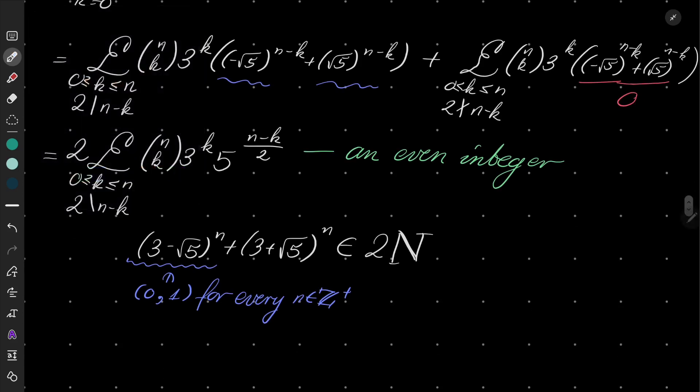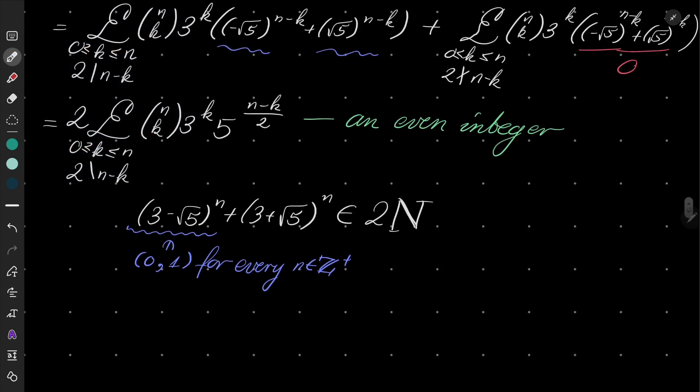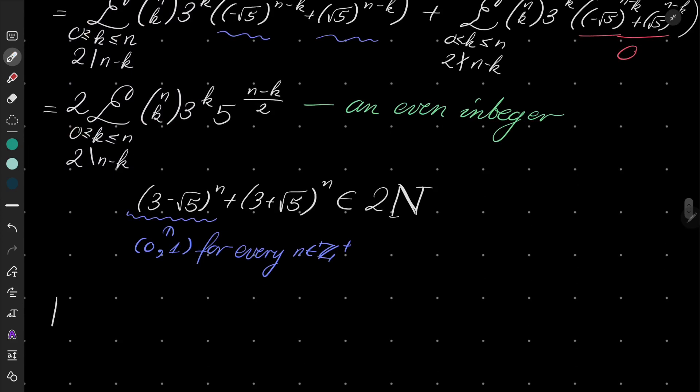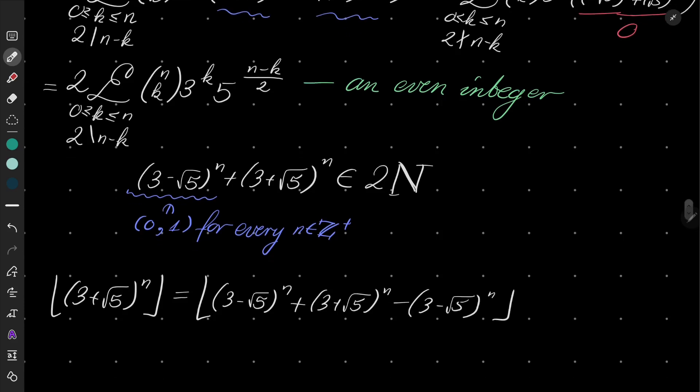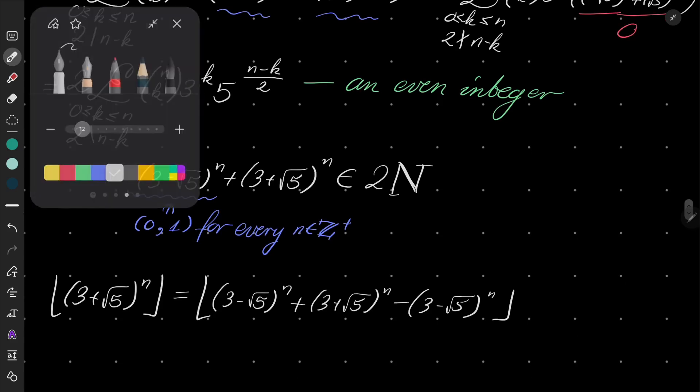So now let's finally consider the floor, the integral part. The floor of (3 + √5)^n. I will write it as (3 - √5)^n + (3 + √5)^n minus (3 - √5)^n.